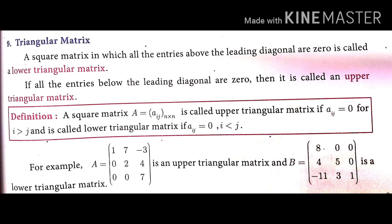For example, matrix A = [1, 7, -3; 0, 2, 4; 0, 0, 7] is an upper triangular matrix because entries below the leading diagonal are zero. Matrix B = [8, 0, 0; 4, 5, 0; -11, 3, 1] is a lower triangular matrix because entries above the leading diagonal are zero.